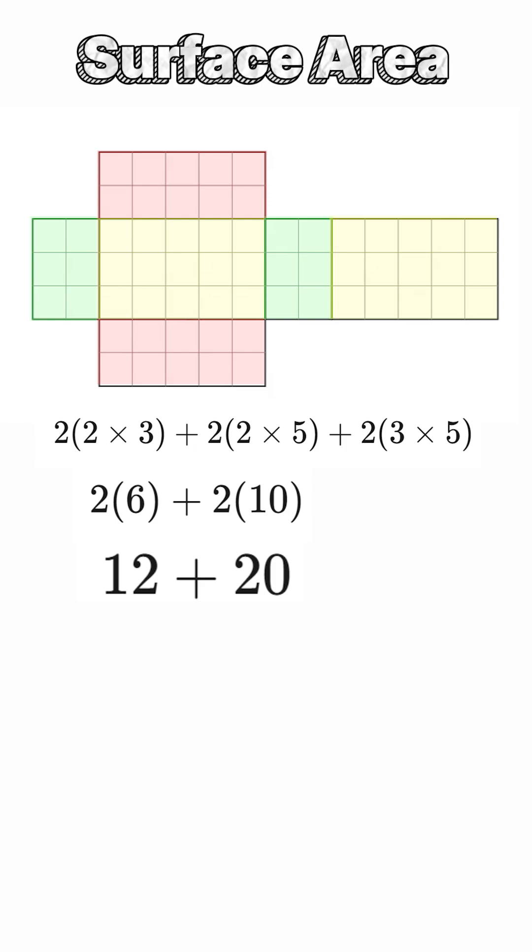A 3 by 5 rectangle has an area of 15 square units. Doubling that gives us 30 square units.